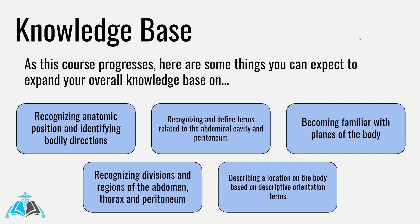As this course progresses, here are some things you can expect to expand your knowledge base on: the ability to recognize anatomic position and identify bodily directions; recognizing and defining terms related to the abdominal cavity and peritoneum; becoming familiar with the planes of the body; recognizing divisions and regions of the abdomen, thorax, and peritoneum; and describing the location of the body based on descriptive orientation terms. The reason there's an emphasis on the abdominal area, peritoneum, and thorax is because that's where a lot of these anatomical positions and orientation terms are centered.